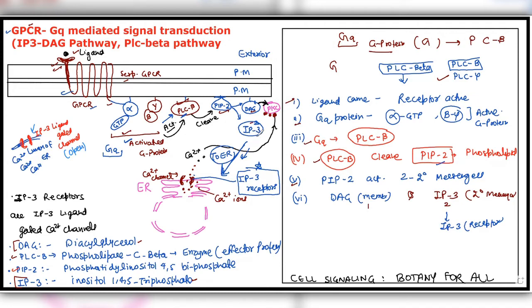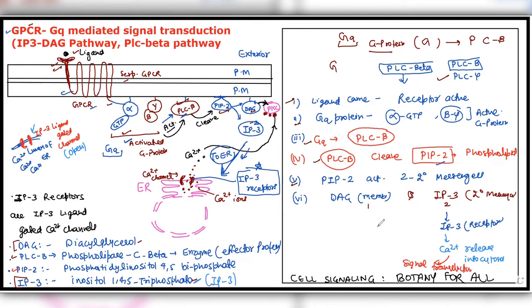IP3 molecule arrived — how? From the cleavage of PIP2, the secondary messenger IP3 was produced. It opened the ER calcium channels. The lumen of the ER is filled with a high amount of calcium, but they cannot come out without the translocator channel. Now that IP3 has opened the channel, calcium is released into the cytosol. Inositol 1,4,5-trisphosphate (IP3), the secondary messenger, opened the calcium channels and calcium began to release. When calcium is released inside the cell as a secondary messenger, it activates many signaling pathways — signal transduction. This is cell signaling: one ligand's effect cascades all the way to calcium channel opening.